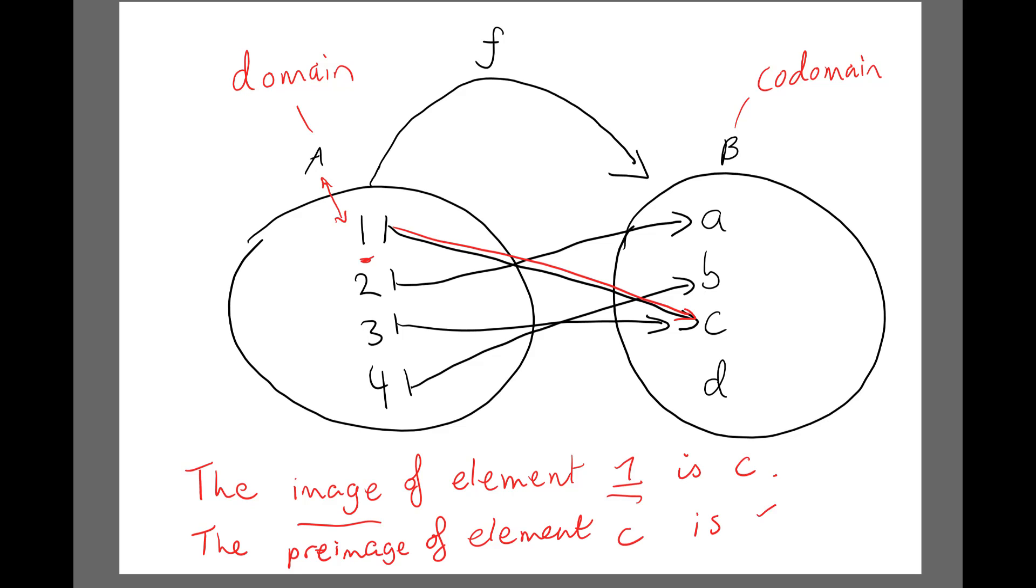On the flip side, the preimage of element C is 1. We can see this is that inverse relationship. The image is looking from your domain over to the codomain, and the preimage is the reverse.